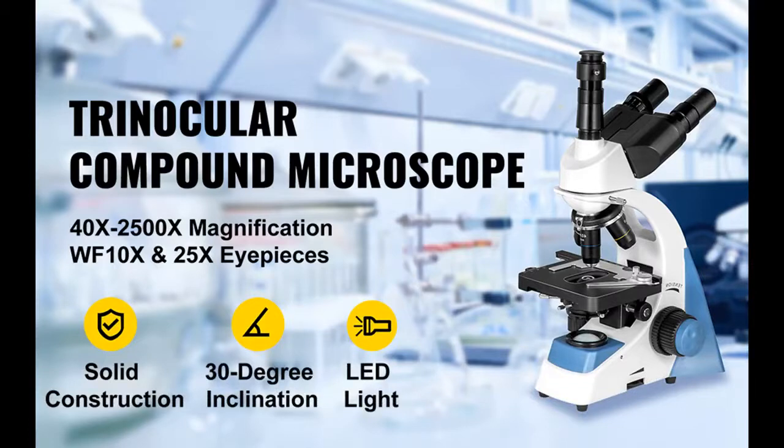And the NA1.25 Abbe condenser with iris diaphragm will process the light from below to enhance the contrast and details of the image.